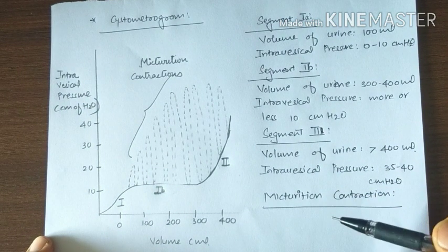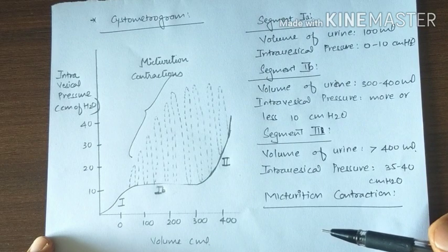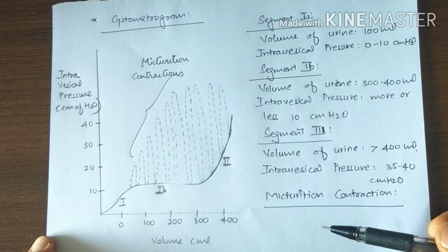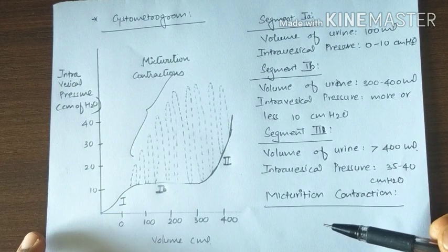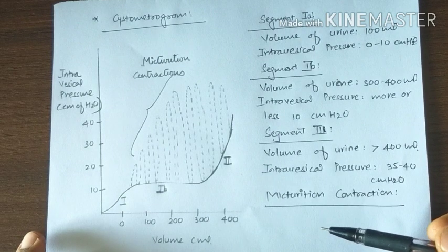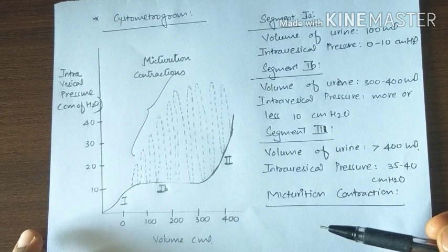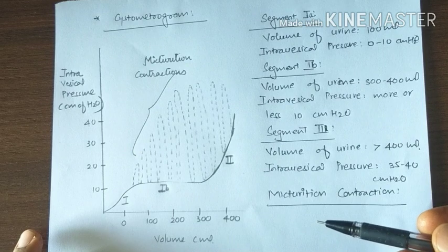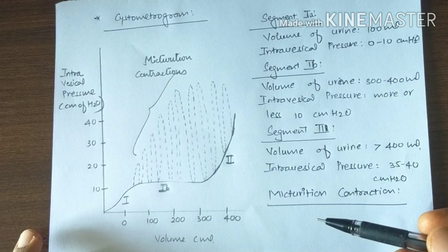Method of recording: A double lumen catheter is introduced into the urinary bladder. One lumen is used to infuse fluid into the bladder and the other lumen is used to record pressure changes by connecting this lumen to a recording instrument.